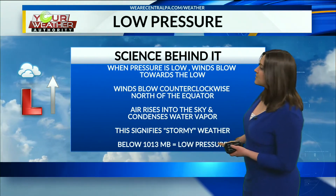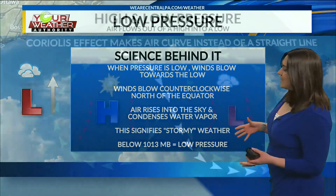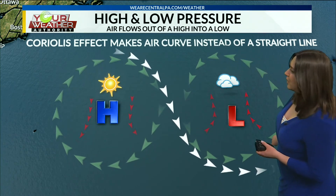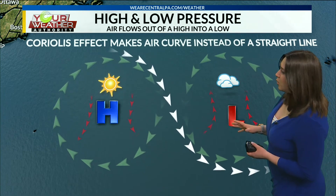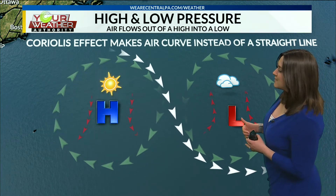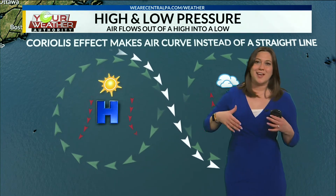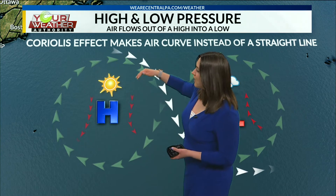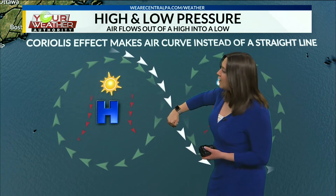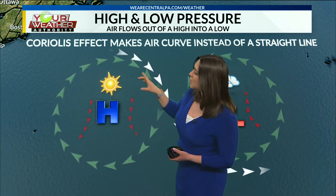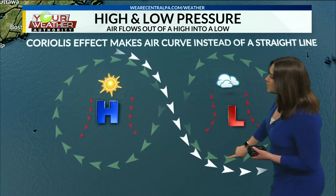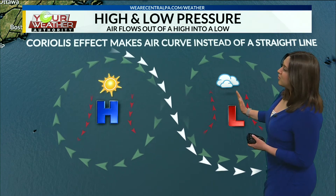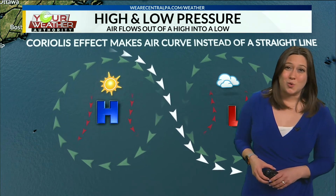I've got another example here showing high and low pressure. We've got air flowing out of a high and into a low pressure system due to the Coriolis effect, which makes the air curve instead of traveling in a straight line. We're looking at an area over water because you need moisture to make a cloud. We've got air sinking down and diverging out of a high in a clockwise motion creating sunshine, and then that air moves into a low pressure system with counterclockwise rotation, converging and creating clouds and stormy weather. That's why air pressure is super important in meteorology.